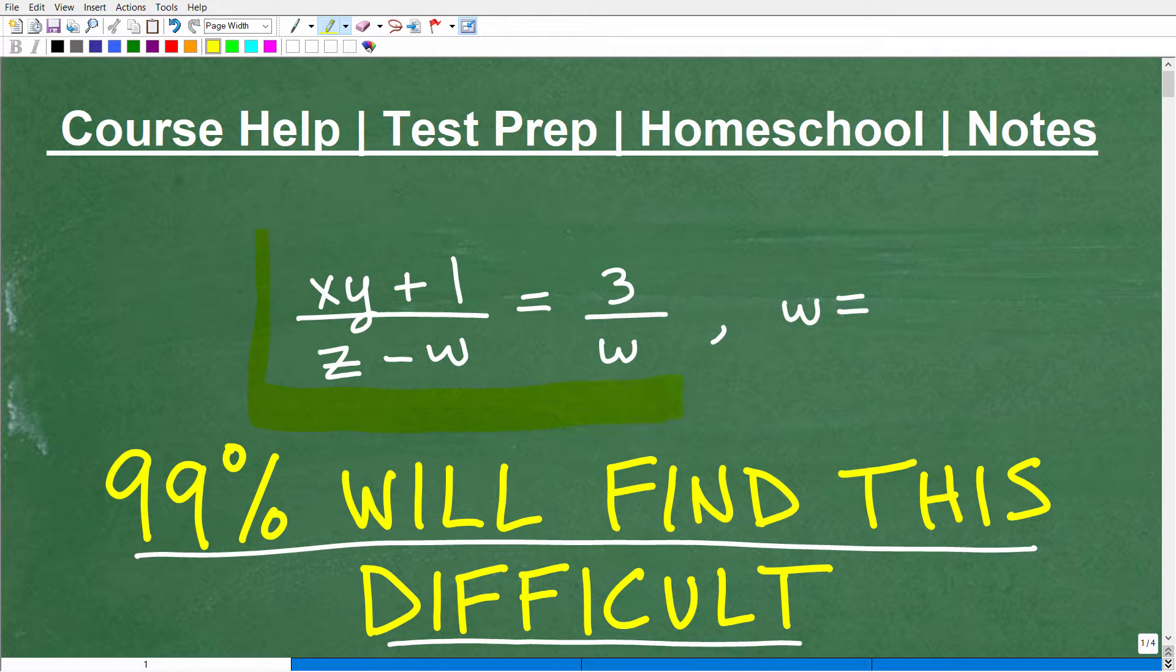So let me explain to you what's going on. What we have is an equation, and it's xy plus 1 over z minus w is equal to 3 over w. And what I want you to do is to rewrite this equation in terms of w. So you're going to have to shuffle around all the other variables, and you're going to have w is equal to something over here that's obviously going to involve x, y, z, and some numbers or whatever the case might be.